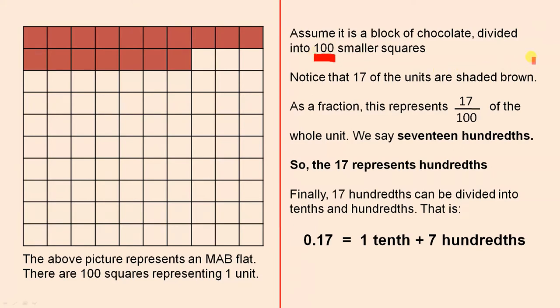Notice that seventeen of the units are shaded brown. Here they are. So seventeen of them have been shaded brown.